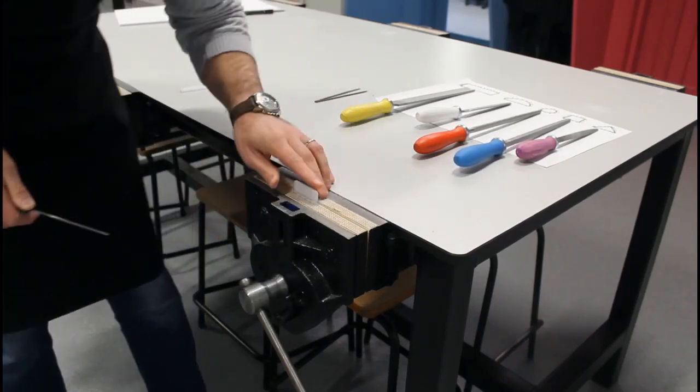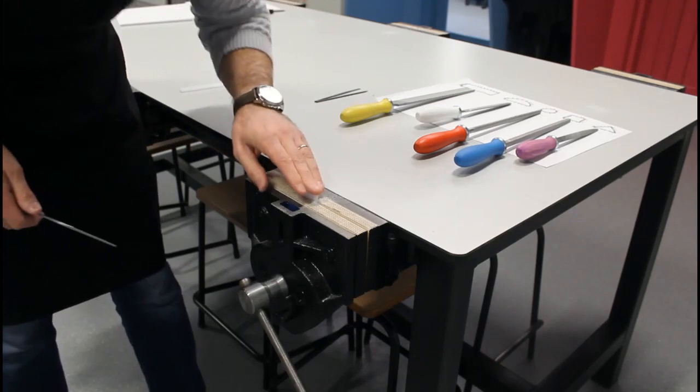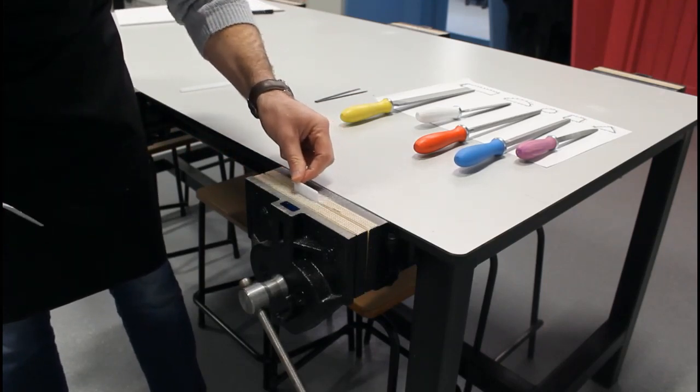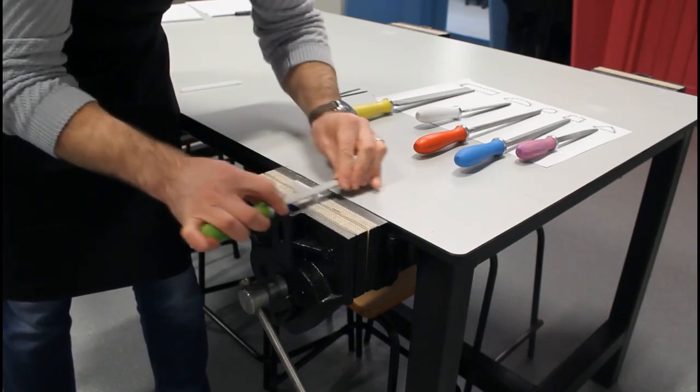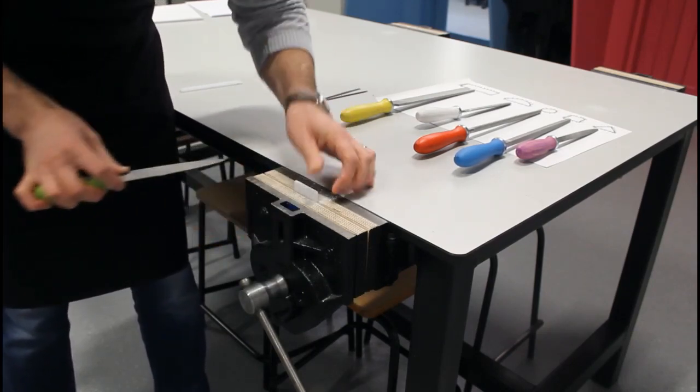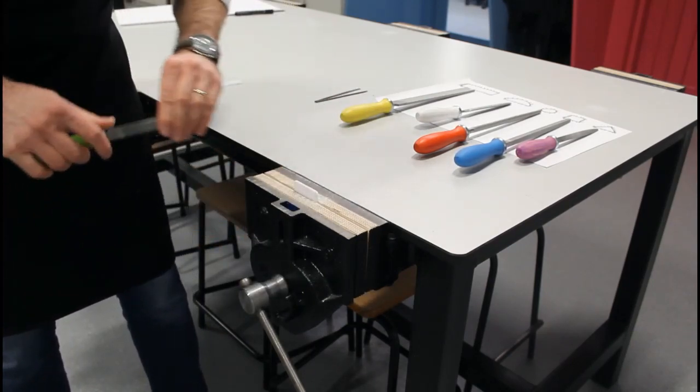Once you've done that, you can run your finger along it, have a look and you should have a nice smooth surface. Check that there's no indents. If there is, go back over it and try it again. So that's draw filing.